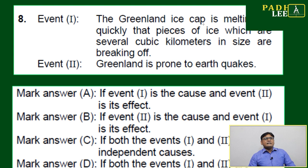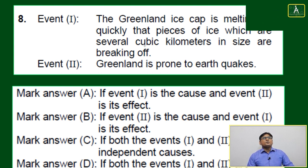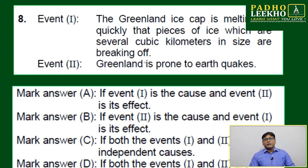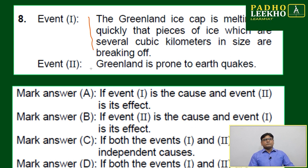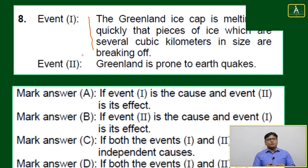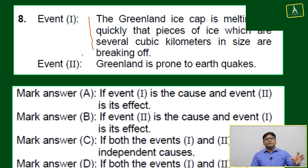Event 1: The Greenland ice cap is melting so quickly that pieces of ice which are several cubic kilometers in size are breaking off in different pieces.